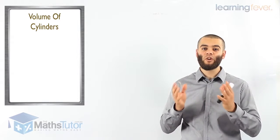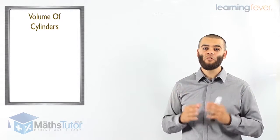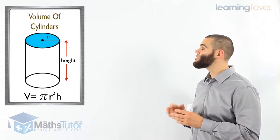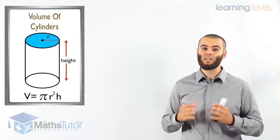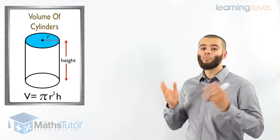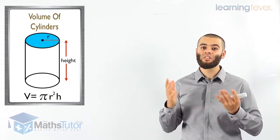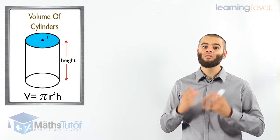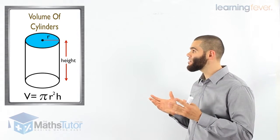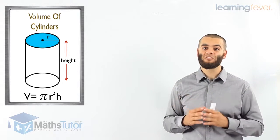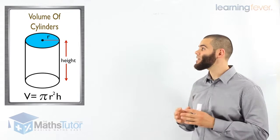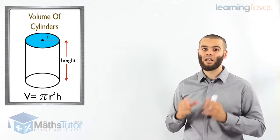Today we're going to learn about the volume of a cylinder. The volume of a cylinder has a special formula: V equals pi r squared times h, or V equals pi r squared h. Pi r squared is, of course, the area of a circle, times h — the height, the total height of the cylinder. So V equals pi r squared h. Let's look at some examples to understand this better.